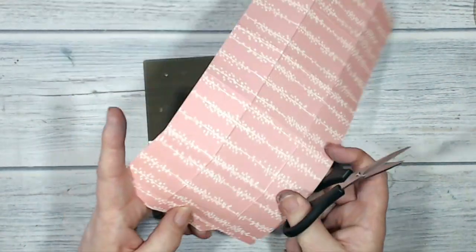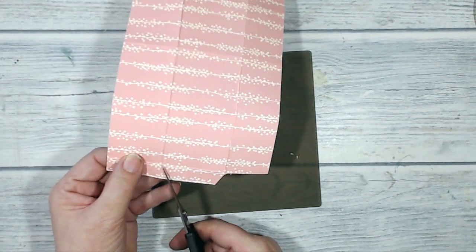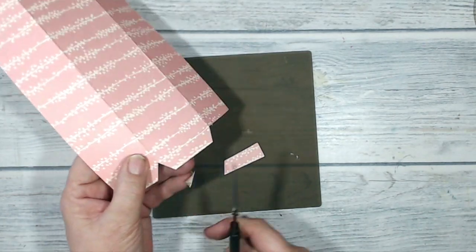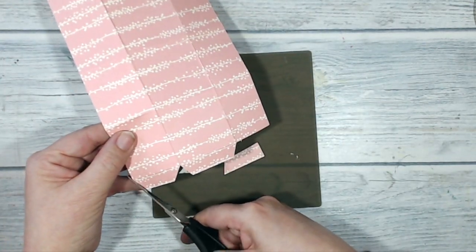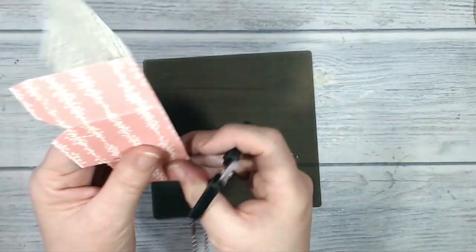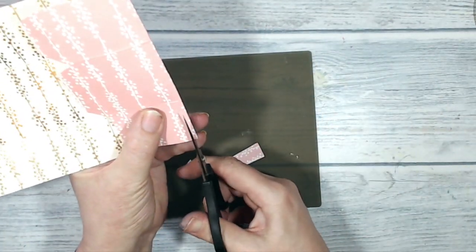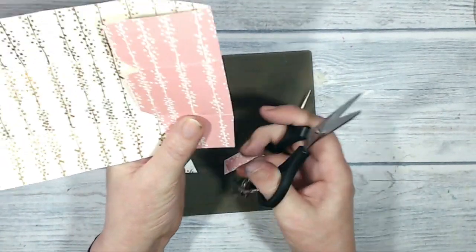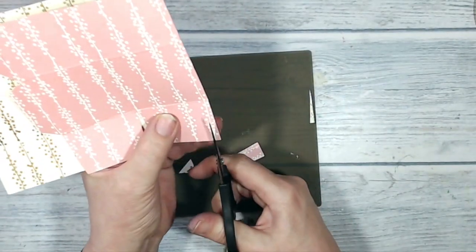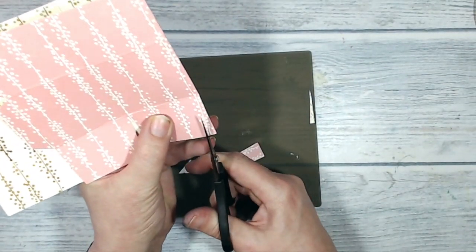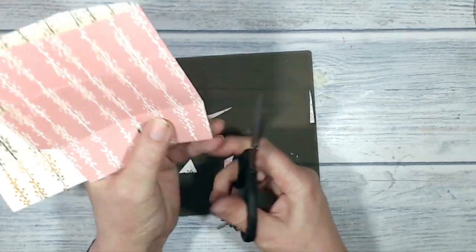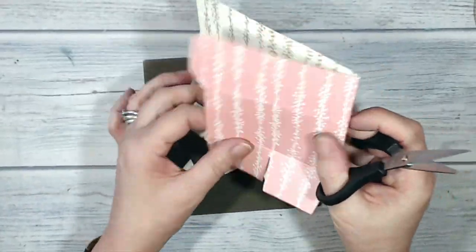I'm going to snip into this panel here and just mark those edges, and I'm just going to cut a little wedge out of each of these pieces.